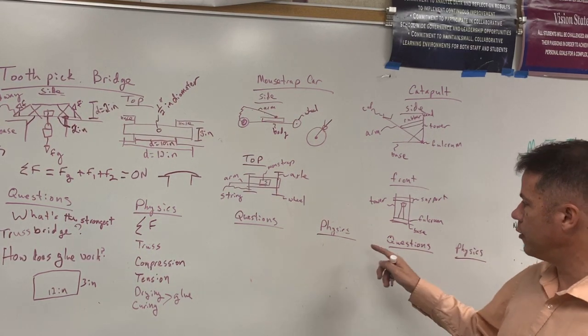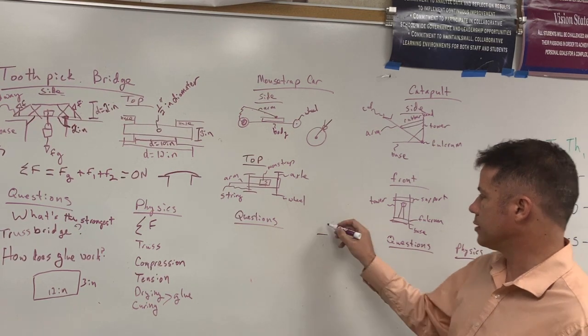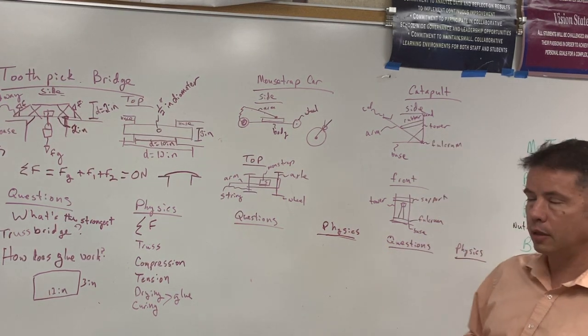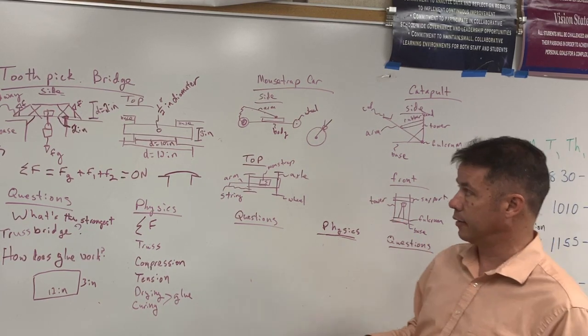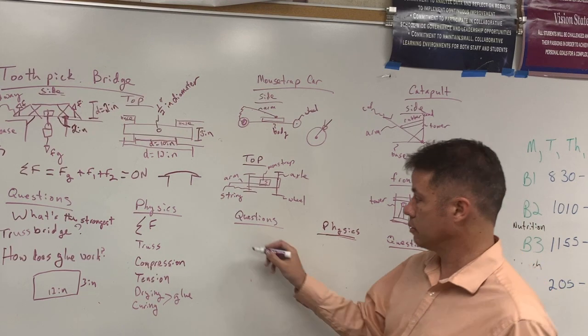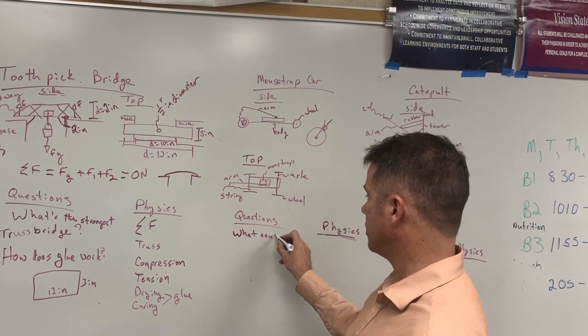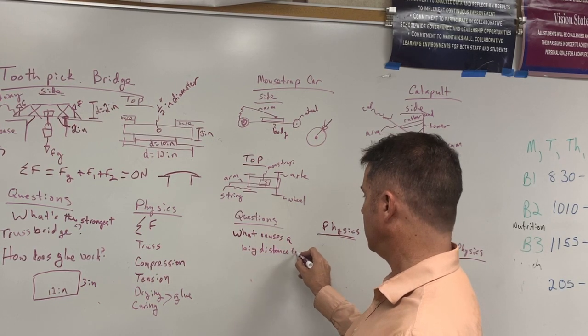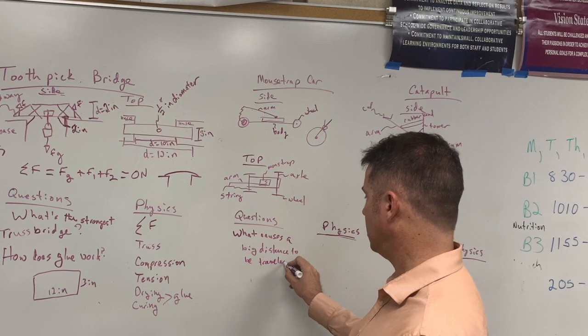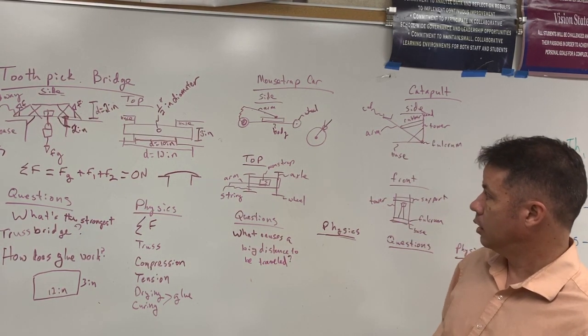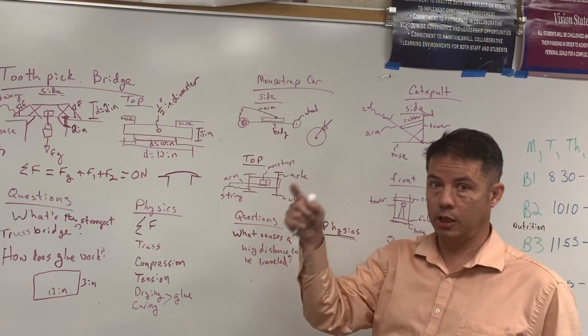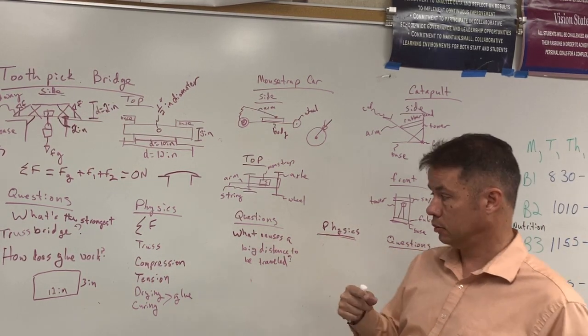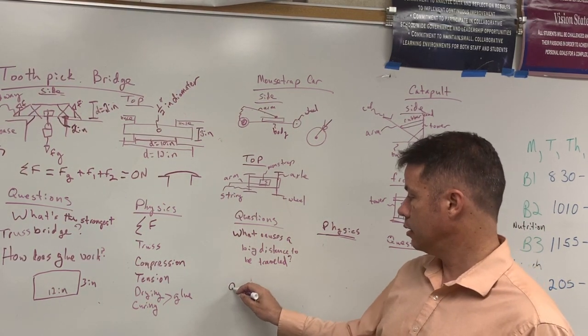Alright, so what questions or what physics do we need to think about for this? So let's think about what is our goal. Our goal is to get the biggest distance, right? So we're trying to get a distance out of this. What's going to cause the biggest distance? So that might be our question. What causes a big distance to be traveled? So what do you think? Well, ultimately, it's the wheel turning that causes the car to move, right? So that turning turns at a speed. So we have this equation.